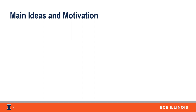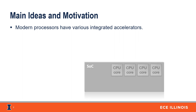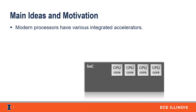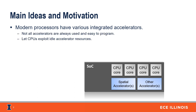Modern high-performance processors are now increasingly integrated with various types of on-chip accelerators. However, these accelerators are not always used by all workloads, nor are they easy to program for, and therefore it would be ideal if the CPU could somehow exploit the accelerators' resources when they are idle and unused.